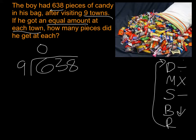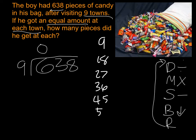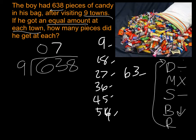So now we move over. How many times can I put 9 into 63? You can start listing your facts: 9, 18, 27, 36, 45, 54, 63. We can't get any closer to 63 than 63 itself, so that's 7. Now 7 goes at the top. We multiply 9 times 7, which gives us 63. Put that down. Now we subtract — 63 minus 63 is 0.